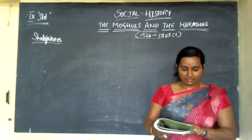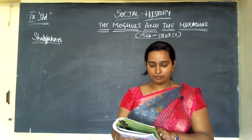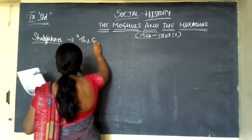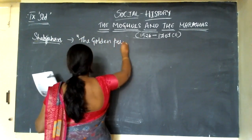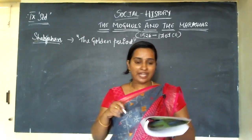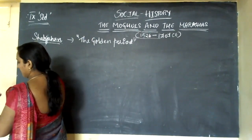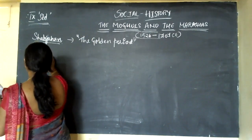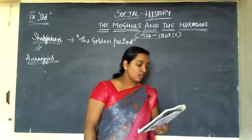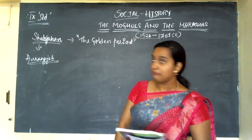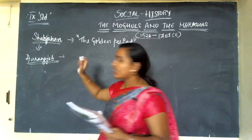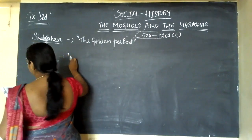There were internal rivalries among Shah Jahan's sons. Finally, Aurangzeb became the successor of Shah Jahan. Aurangzeb imprisoned his father and ascended the throne with the title Alamgir. He imprisoned Shah Jahan and became the successor, which is the reason he is called Alamgir.